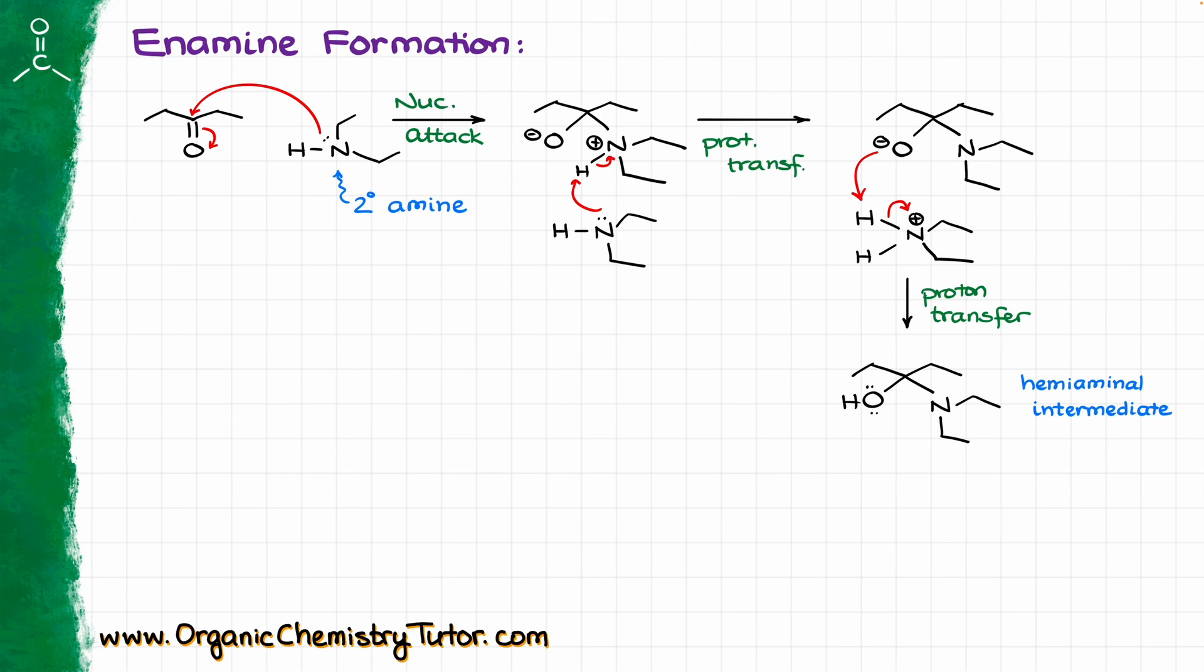Again, I am showing here the two proton transfer steps, I'm using the chaperone, although as I've mentioned before, some instructors will do the shortcut where they will just show it like that, intramolecularly, which as I've mentioned is unlikely to happen. Now, once we have our hemi-aminol intermediate, the next thing, like in the previous case, is going to be to protonate our OH in order to make that into a leaving group. That leaving group is going to dissociate, giving us the iminium ion again.